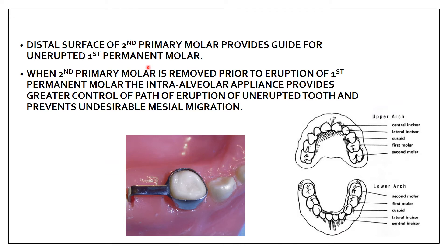The distal surface of the second primary molar provides a guide for the unerupted first permanent molar. The primary arch has five teeth: central incisor, lateral incisor, cuspid, first molar, and second molar. The first permanent molar erupts behind the second primary molar. When the second primary molar is removed prior to eruption of the first permanent molar, this appliance guides the eruption — hence the name eruption guidance appliance.